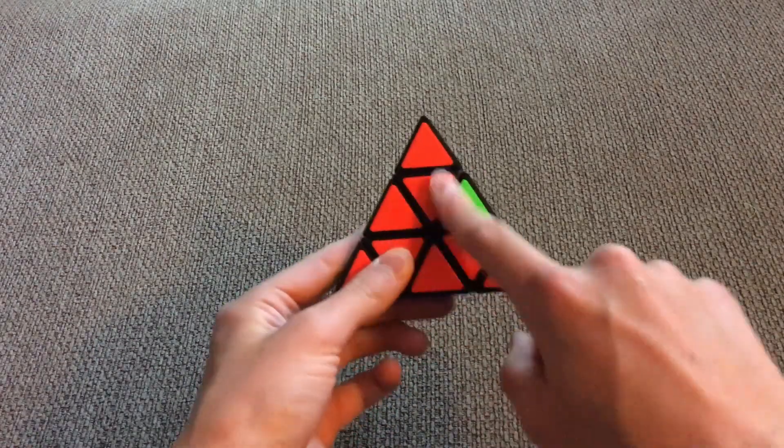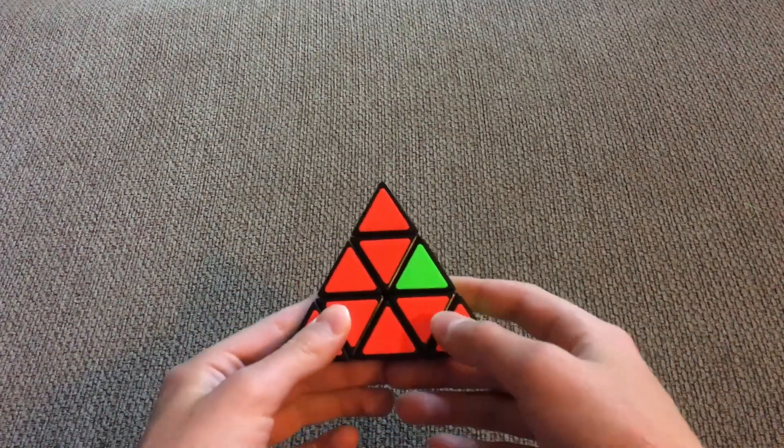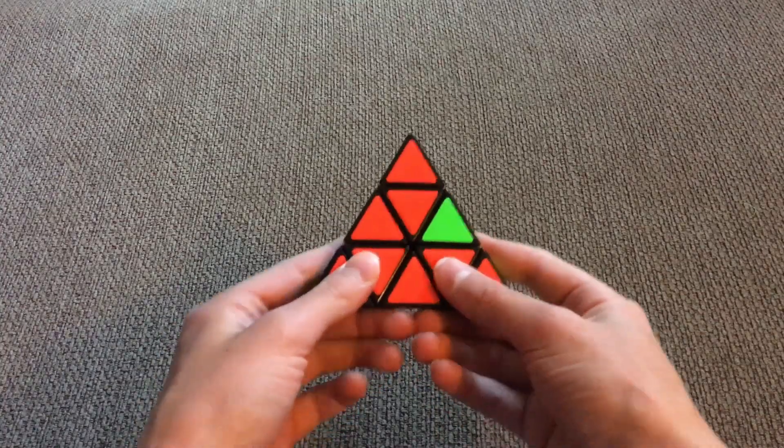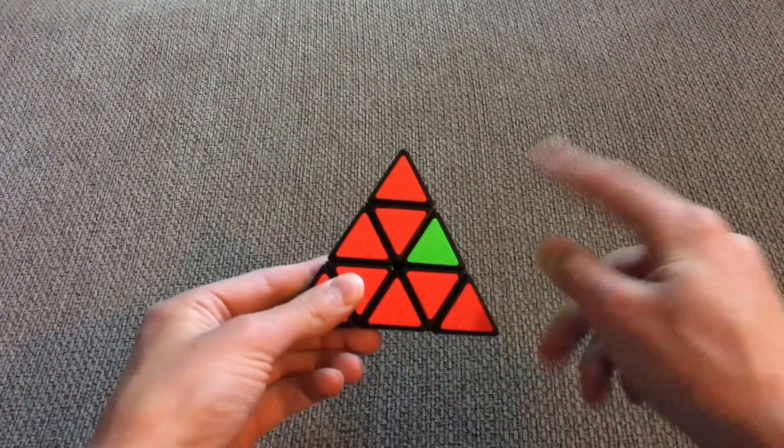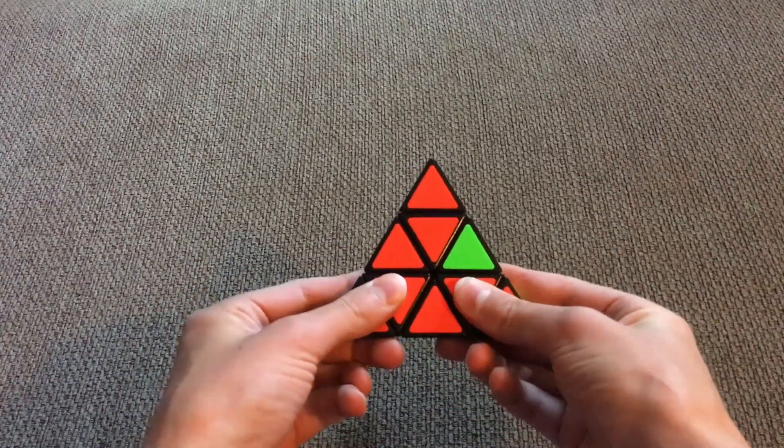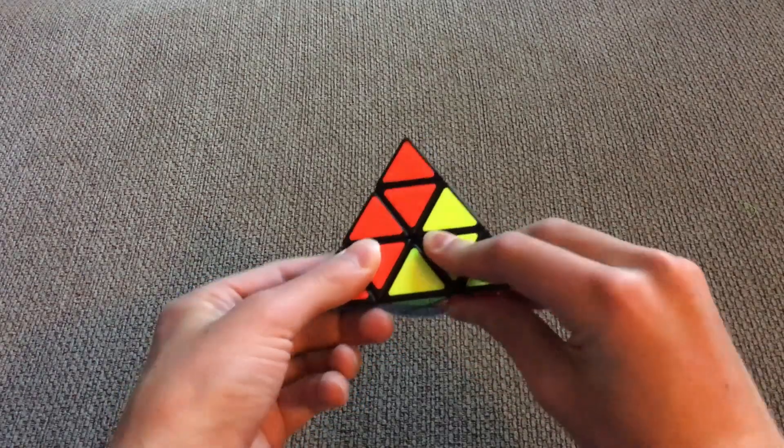Then you look on this side that is now facing towards you, and you look which side has the wrong color. Then what you do is you take this side, which is the right side in this case, and you bring it down.